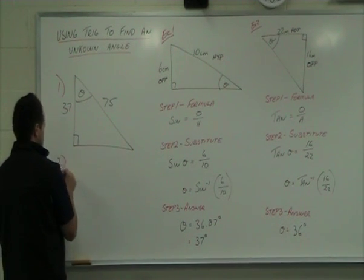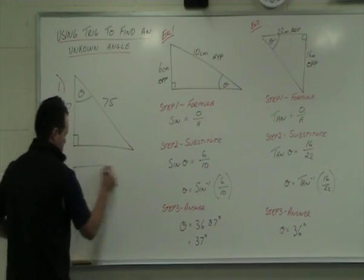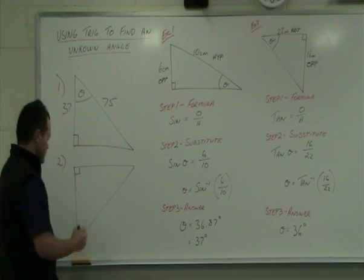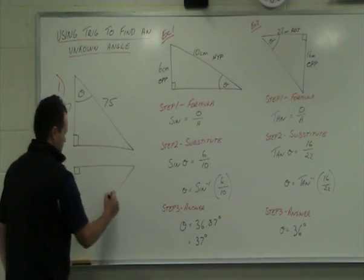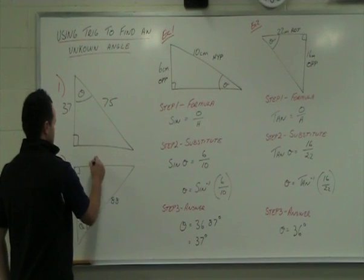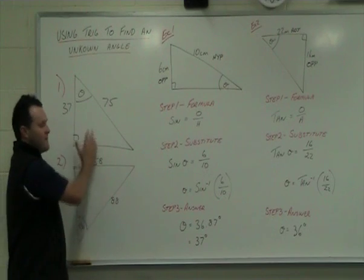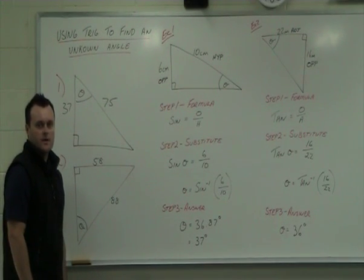Practice number two. Right angle triangle, angle down the bottom, side of 88 and 58. So, go away, have a go at these two practices, come back in five minutes and we'll go through the answers.